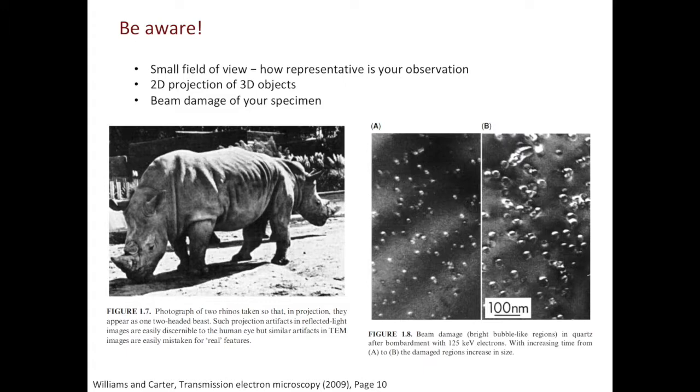The second thing to bear in mind is that in TEM, you are looking at the 2D projections of 3D objects. A classical example is the two-headed rhino you see in the figure on the left. The third thing to bear in mind is that you are dumping very high-energy electron beam into your material. Your material can get damaged. As shown in the figure on the right, the damage can accumulate as you increase the exposure time of your specimen under the electron beam.